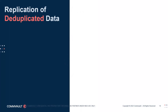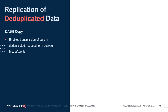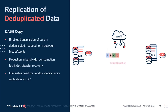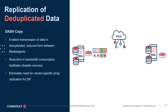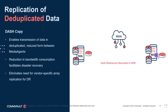Next, a quick refresher on Commvault deduplication features likely to influence your design. DashCopy is a technology that enables the transmission of data in its deduplicated, reduced form factor between media agents. This includes the capability to recover data and maintain different retention periods independently from the primary copy. This reduction in bandwidth consumption facilitates disaster recovery and eliminates the need for vendor-specific appliances or third-party replication technologies. When sizing a solution that utilizes DashCopy, the primary copy and any additional copies should be sized independently, including DashCopy configurations using cross-site replication. A DDB is also required on the destination media agent for dedupe signature comparison.